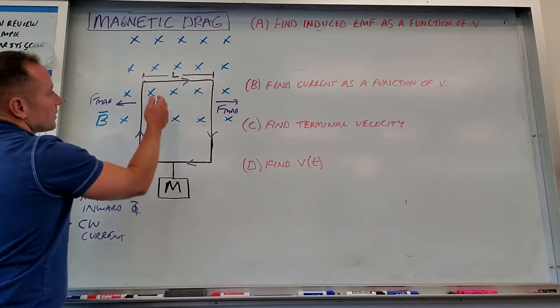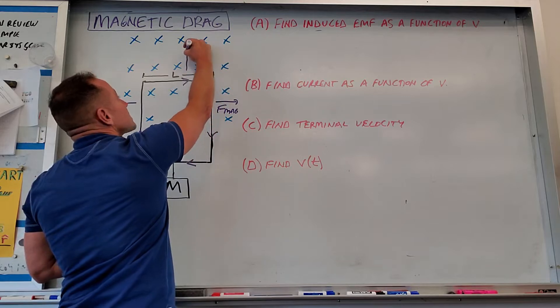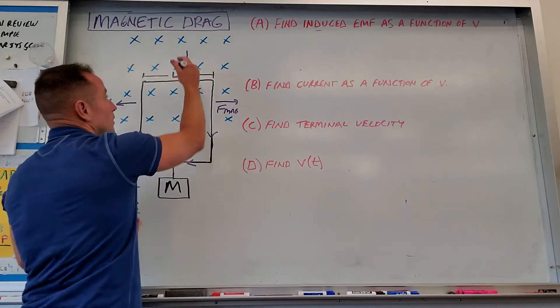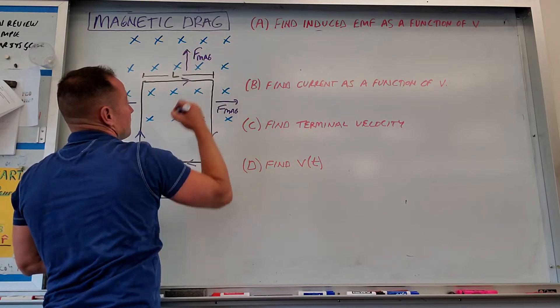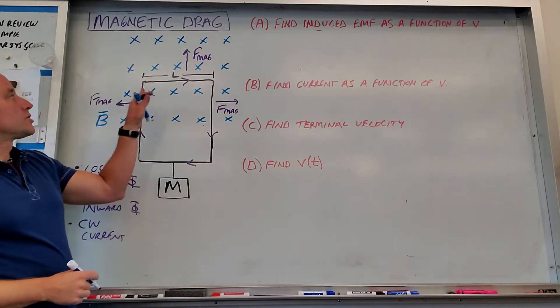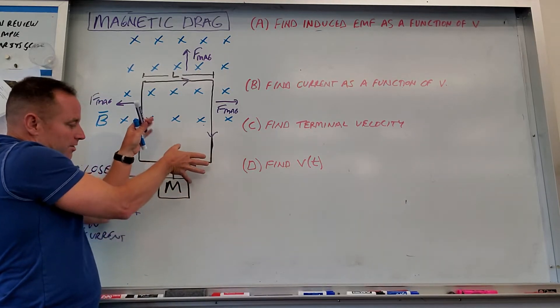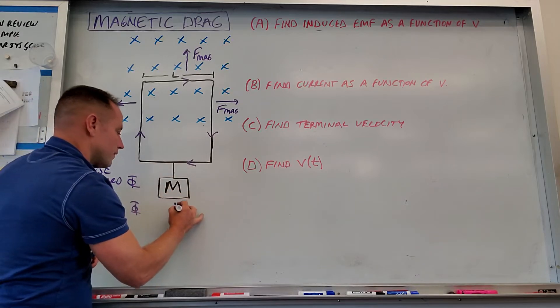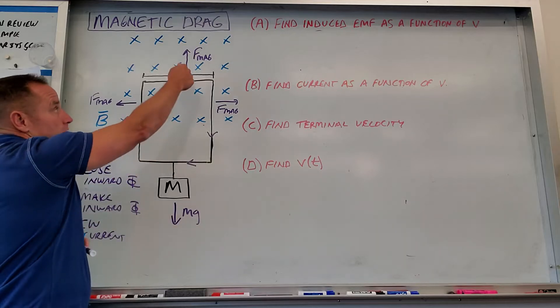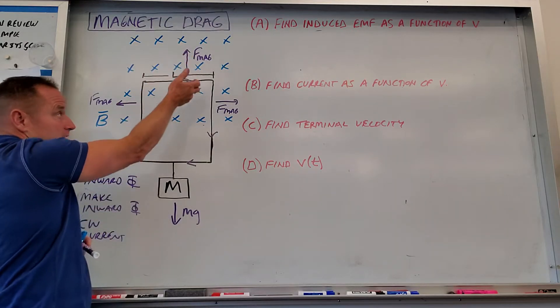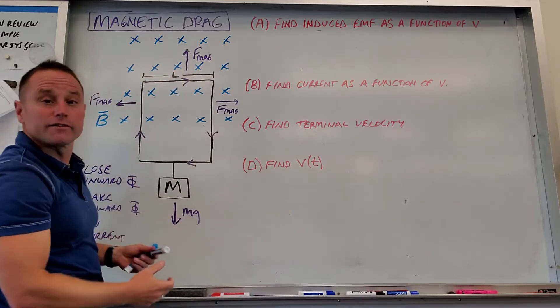If you look at the top, you have current going to the right through a field that points in. There's going to be a magnetic force upward that's going to resist as gravity tries to pull this thing out of the field. So you'd have F magnetic pointing this way. So what's going to end up happening is you let it go. It starts to fall because of the force of gravity, mg. And as it starts to fall, you're going to induce currents that lead to this magnetic force that kind of resists the motion. It's going to act like a drag. It's going to feel very syrupy if you were trying to pull this out of the field.